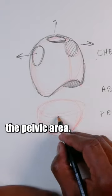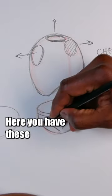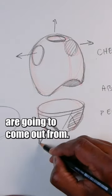Then you would have the pelvic area. Just think of it as like a half dome. Here you have these sockets, which is going to represent where the legs are going to come out from.